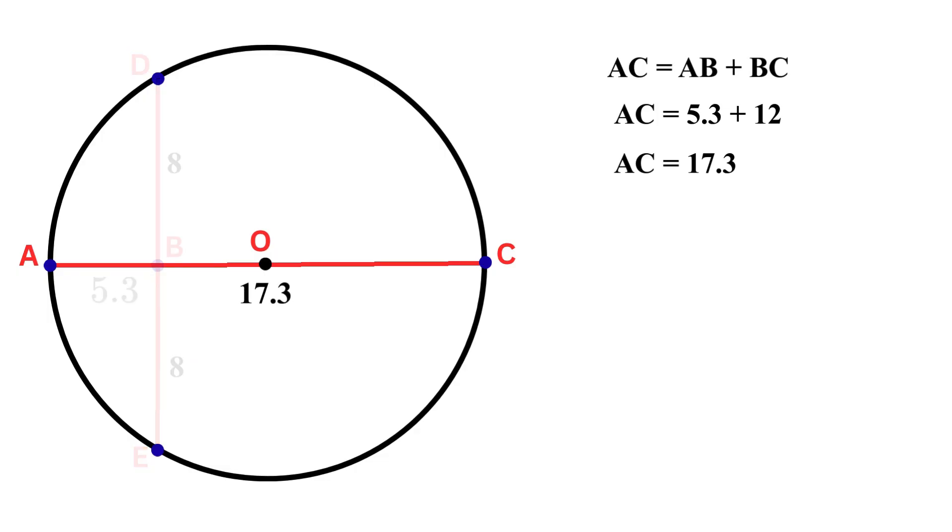Now we can easily find the radius of this circle, as you know that the radius is half the diameter. So divide the diameter into two parts and it gives us 8.67 units. And that is the radius of the circle.